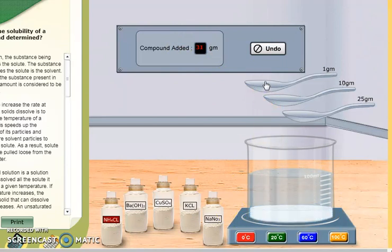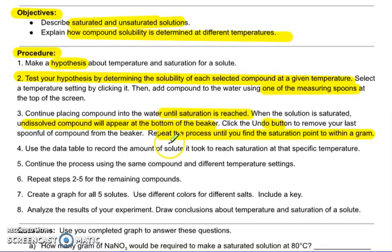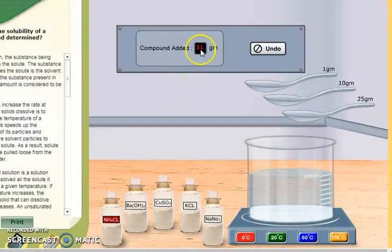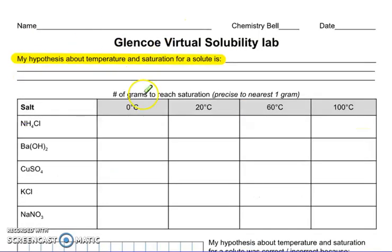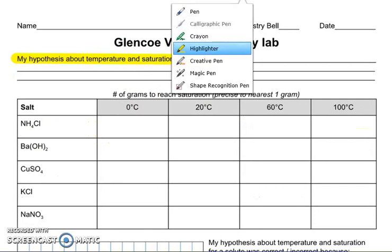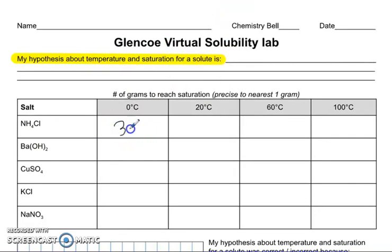31, I am oversaturated. So what would I put in my data table? I'm going to go back. We want to remove your last spoonful until we get to the saturation point within a gram. So for ammonium chloride at zero degrees Celsius, it was 31 grams. That's going to go on our table. So ammonium chloride at zero degrees Celsius, 31 grams.